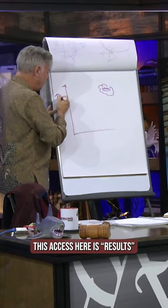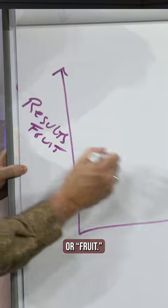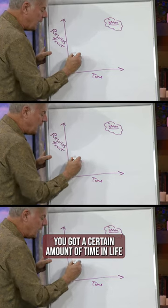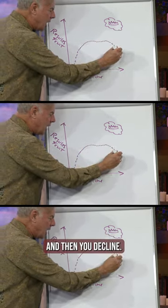This axis here is results or fruit. This axis over here is time. You've got a certain amount of time in life in which you grow, grow, grow. You hit your maximum capacity. You plateau, you plateau, and then you decline.